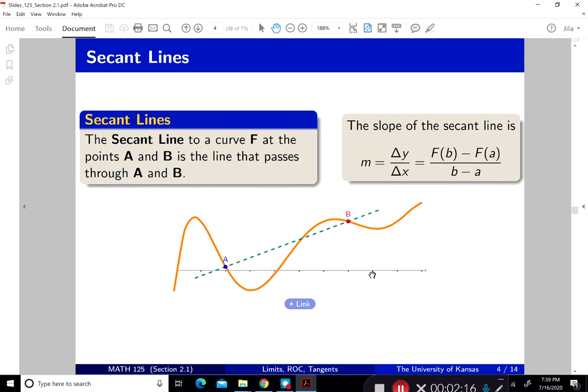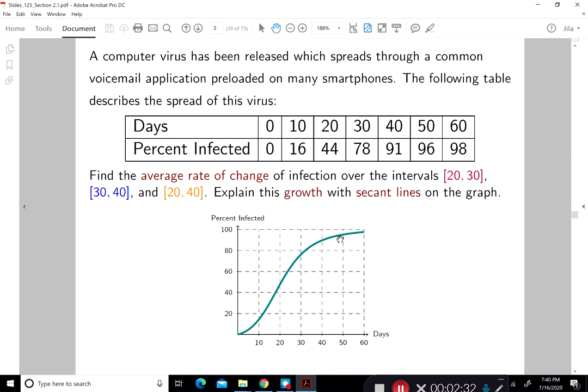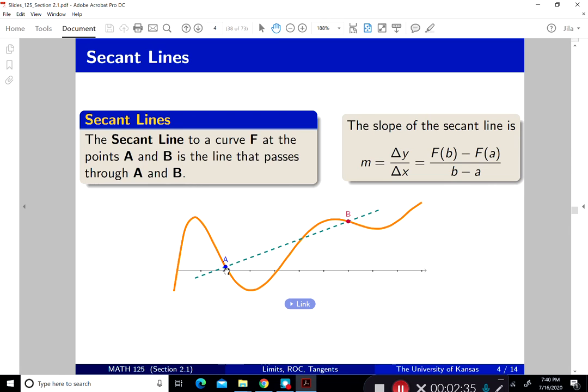Now, what is a secant line? A secant line to a curve F at point A and B is the line that passes through A and B. So here's the line A and B. And then if you look, the secant line passes through A and B. And so the slope of the secant line is M equal to the change in Y over the change in X. And that's F of B minus F of A. That's the change in Y over B minus A.